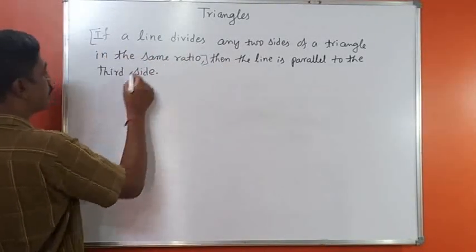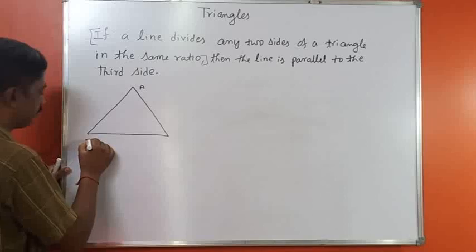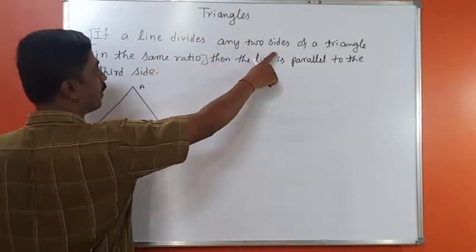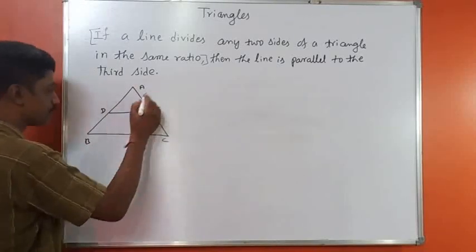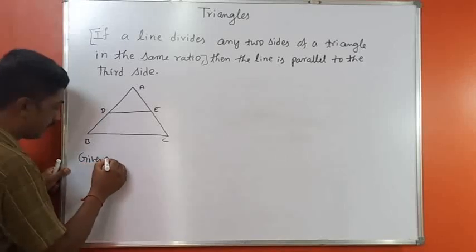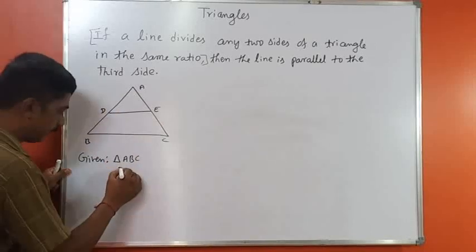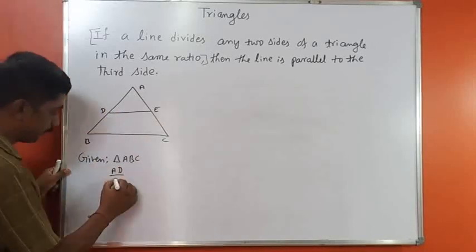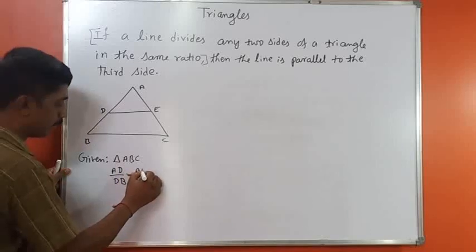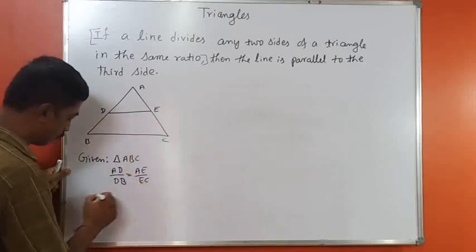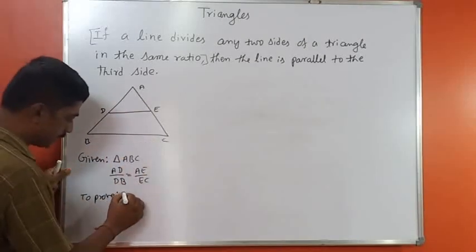Let me draw the diagram first. Suppose triangle ABC is given, in which a line DE divides two sides in the same ratio. So what is given: triangle ABC in which AD/DB = AE/EC.